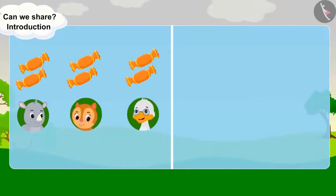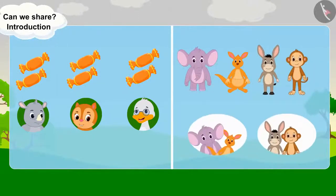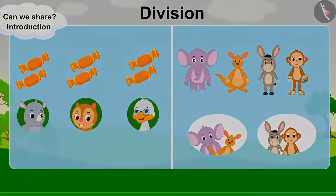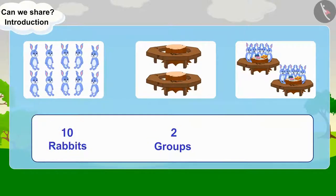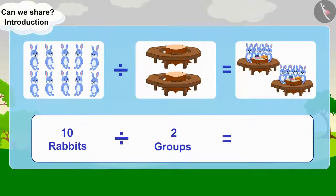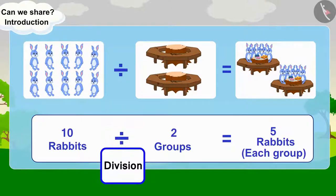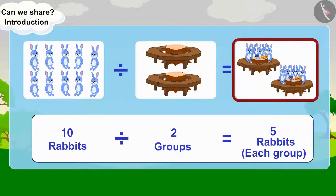Distributing things equally among people or making equal groups of people or things is called division. Here, we are forming two equal groups of ten rabbits. Dividing ten rabbits into two equal groups gives five rabbits in each group. This is the total number of things to be divided. This symbol represents division. This is the total number of groups, and this is the total number of things in each group.